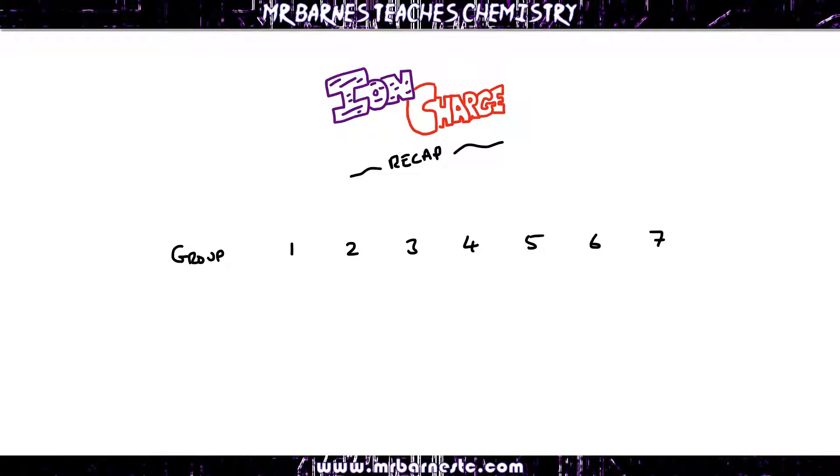I'm going to start off with groups 1 to 7. You should remember the group number tells you the number of electrons in the outer shell. So group 1 has one electron in the outer shell, group 2 has 2, group 3 has 3, group 4 has 4, and so on all the way up to group 7.